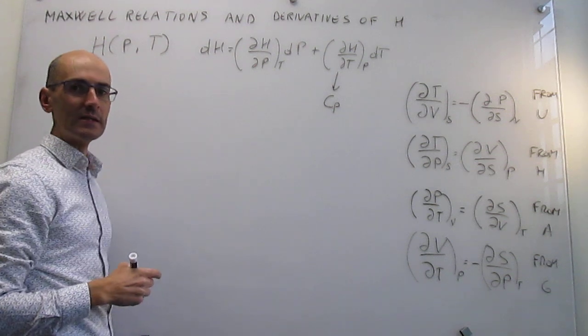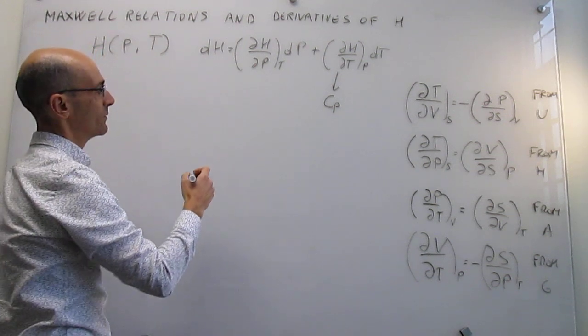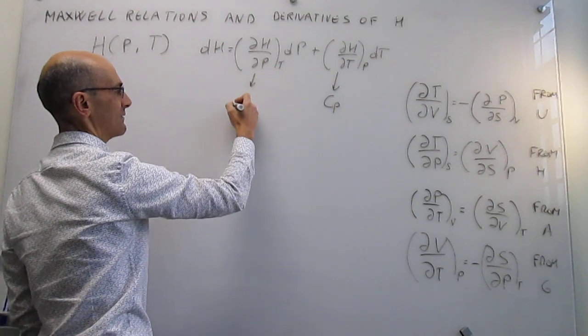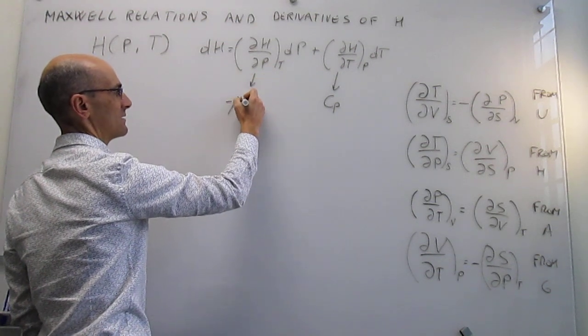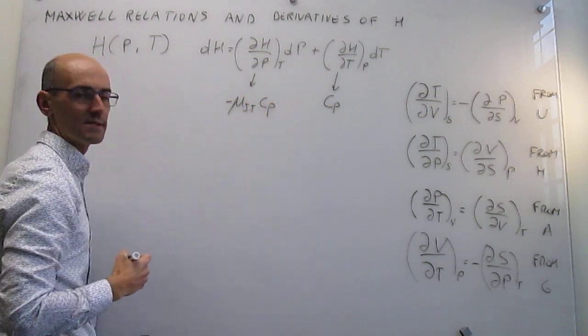For this one, we also did a little bit of work towards the end of the chapter of the first law, where we saw that this partial derivative was the minus Joule-Thompson coefficient multiplied by the heat capacity.